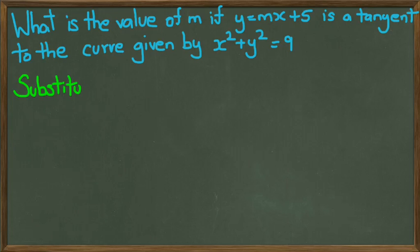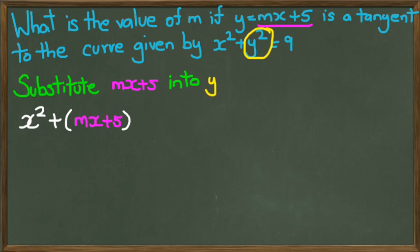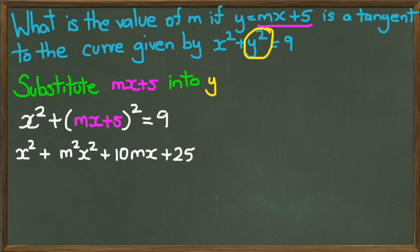So the first thing we're going to do, as usual, is substitute mx plus 5 into y. And when we do that, we're going to get x squared plus mx plus 5 whole squared equals 9. So we have to expand the mx plus 5 squared. And when we do that, we get m squared x squared plus 10mx plus 25 equals 9.